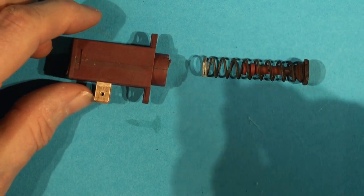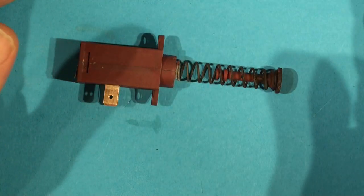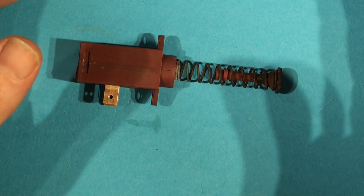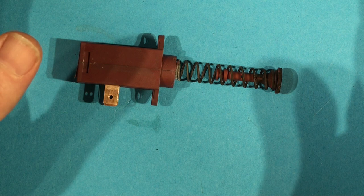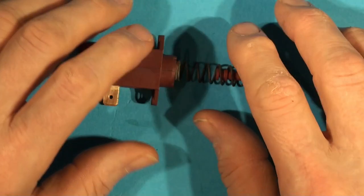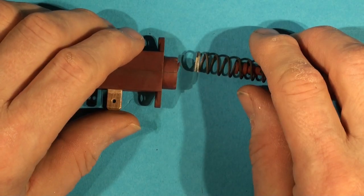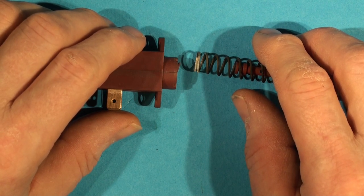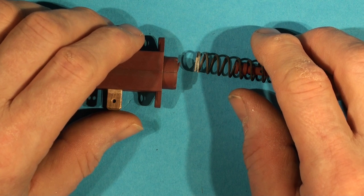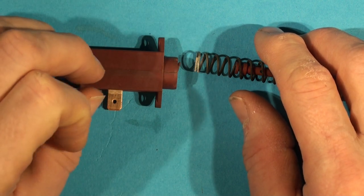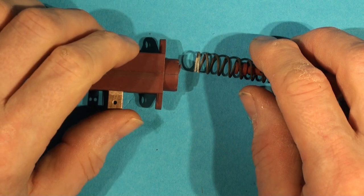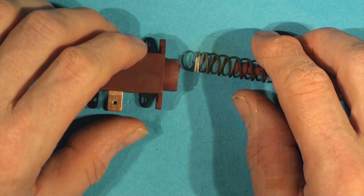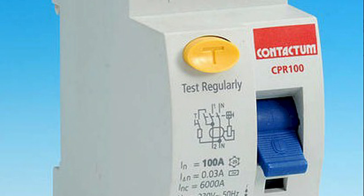If it blows the fuse, normally when the heating element goes it goes open circuit and you get no heat at all, or it trips out the RCD, the residual current breaker on your circuit board. Nearly all houses these days are fitted with a residual current breaker which detects any imbalance between the current flowing down the live and neutral.